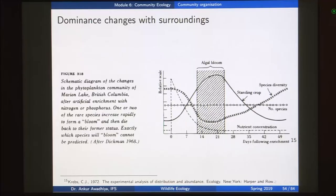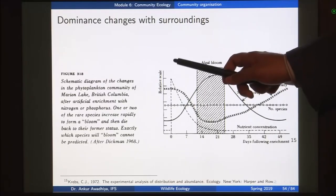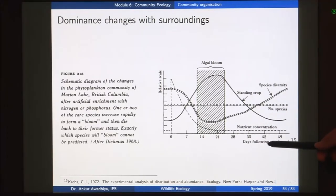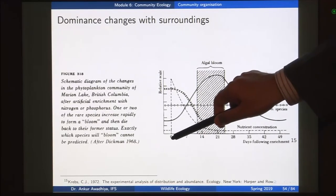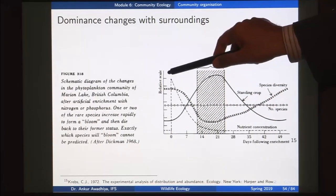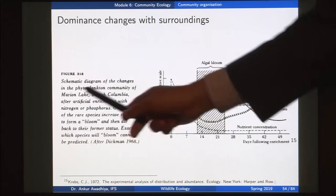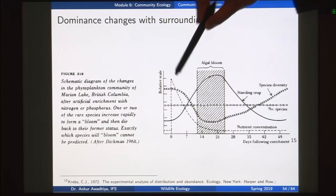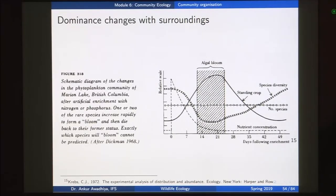In this particular experiment, scientists tried to artificially perform eutrophication in a controlled manner. On the x-axis we have the days following the enrichment, so on day 0 you added the nutrients — nitrogen or phosphorus. The dashed line shows the nutrient concentration in the water: before day 0 it is at the normal level, then it is spiked with nutrients, and after a while the concentration starts to come down.